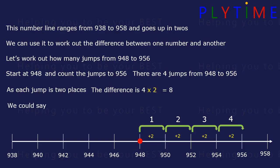So we could say 948 plus 8 equals 956. Or we could say 956 minus 8 equals 948. Remember, always check the scale on the number line.